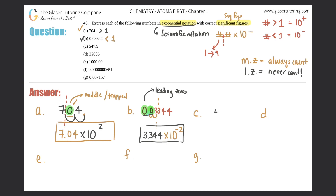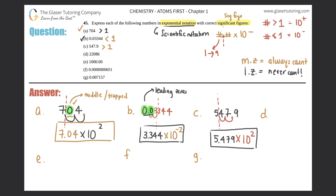Letter C: 547.9. The decimal is here; move it to right after the first non-zero digit. That's two bunny hops, so times 10 to the second. No zeros to worry about. This number is greater than one, so it's a positive two. We write 5.479 and include all digits because all non-zeros always count. Final answer: 5.479 times 10 to the second.